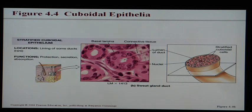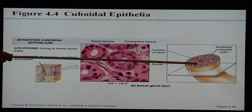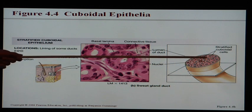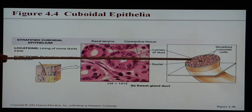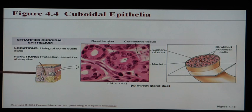This next example has more than one layer of cells, so it's stratified. Looking around the perimeter, the shape is a cube — making this stratified cuboidal epithelia. Because it's stratified, we'd expect to find it a little closer to the surface. It was in fact taken from a sweat gland in the skin.